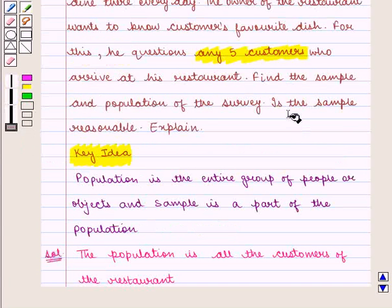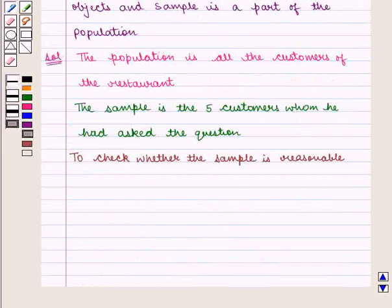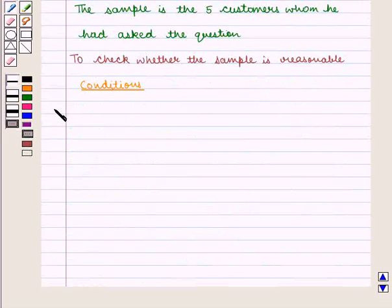Now, we also need to check whether the sample is reasonable or not. For this, we know that the sample should satisfy the following conditions. The first condition is sample should be selected at random.